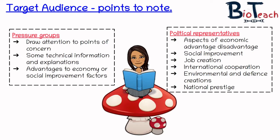The last target audience is political representatives. Science, engineering, technology and research are covered by most governments by a specialist department. In the UK, the Government Office for Science covers this. In order for MPs to represent interests in science, they need a good understanding of the science itself or access to departments which can offer high-quality, detailed scientific information and advice. When your target audience is political representatives, it's a really good idea to look at the aspects of economic advantage and disadvantage. You might also want to look at social improvement, and things like creation of jobs, as that can improve the social standing of an area. If you're talking about a project which requires international cooperation, that could be of benefit to the country or the parliament. You should also think about environmental and defence considerations as well, particularly for things like nanotechnology.